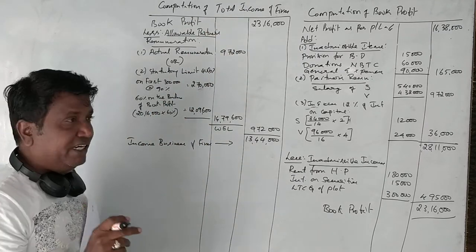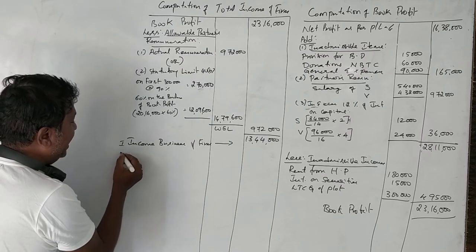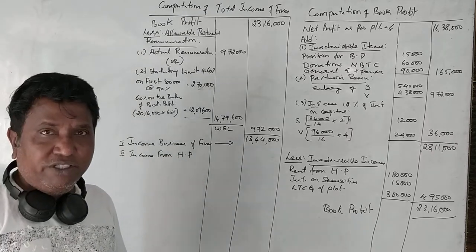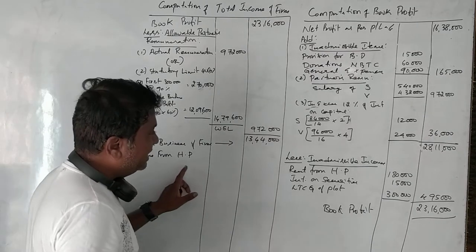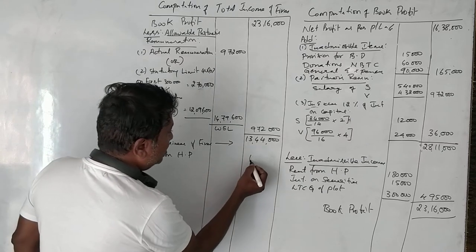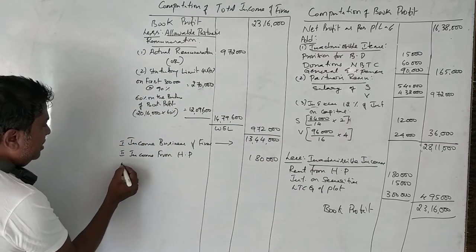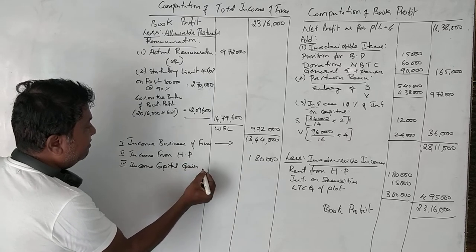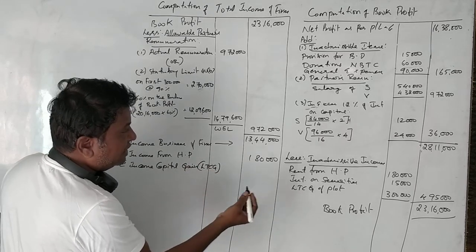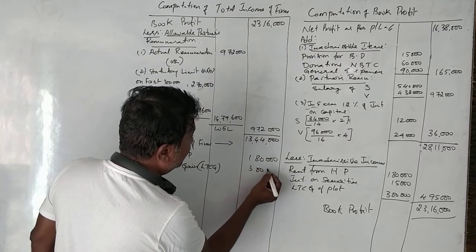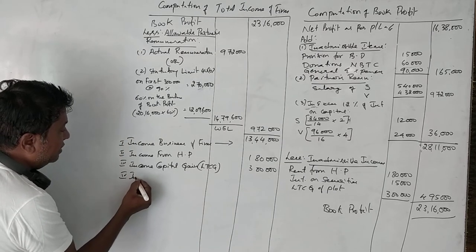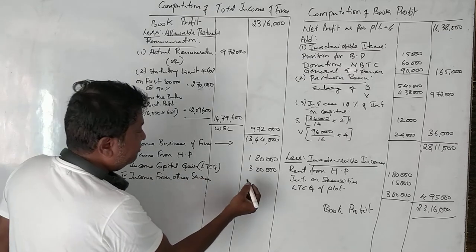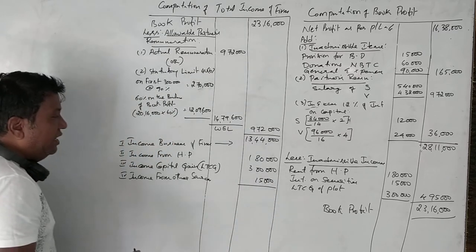To arrive at total income, we add other heads: income from house property ₹1,80,000 — no further calculation needed as it is directly taken from the question. Income from capital gains: LTCG on plot ₹3,00,000. Income from other sources: interest on securities ₹15,000. Adding all four heads gives ₹18,39,000 as gross total income.